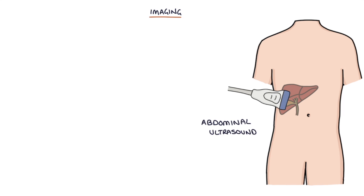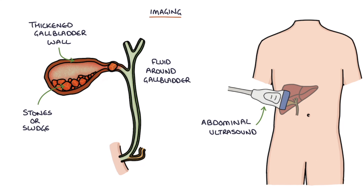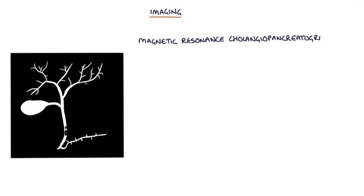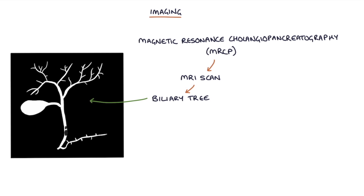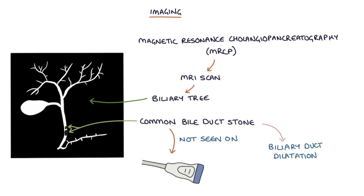The first step in imaging is an abdominal ultrasound scan. Signs of acute cholecystitis on ultrasound include a thickened gallbladder wall, stones or sludge in the gallbladder, and fluid around the gallbladder. Magnetic resonance cholangiopancreatography (MRCP) is a type of MRI scan used to visualise the biliary tree in more detail, and is used if a common bile duct stone is suspected but not seen on ultrasound. Reasons to suspect a common bile duct stone include biliary duct dilatation on ultrasound or a raised bilirubin on blood tests.